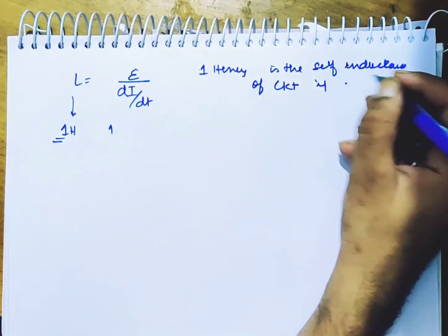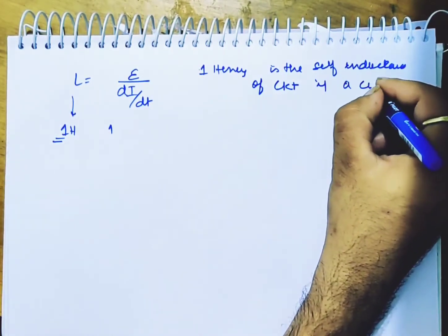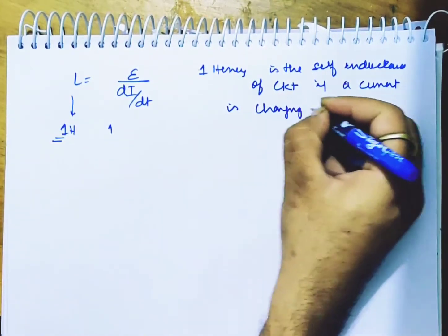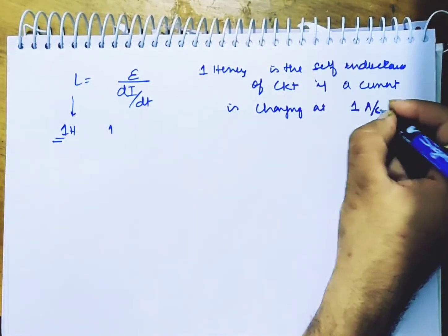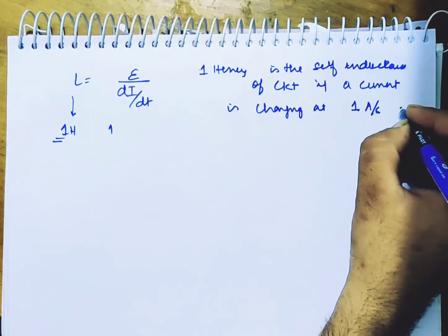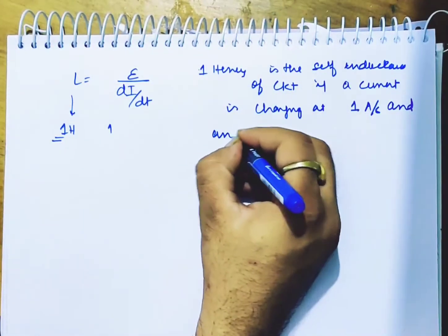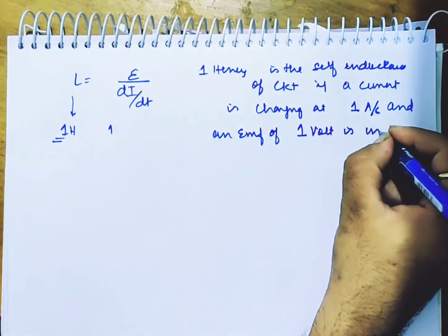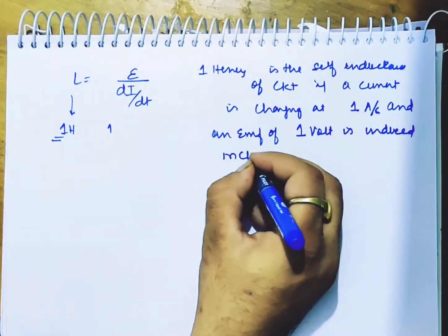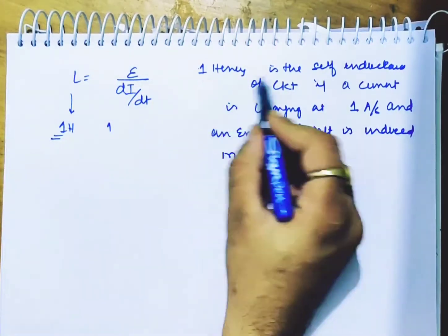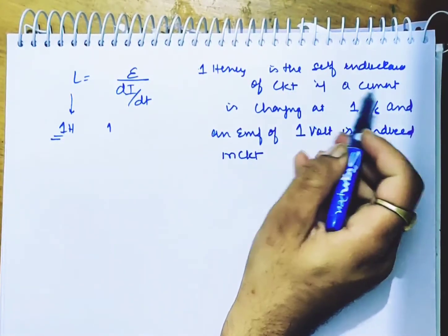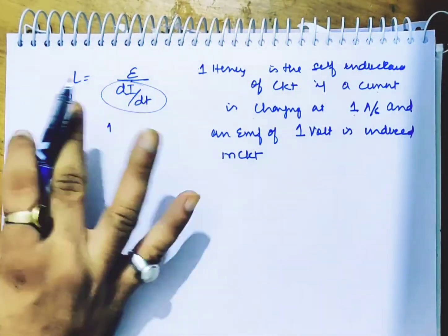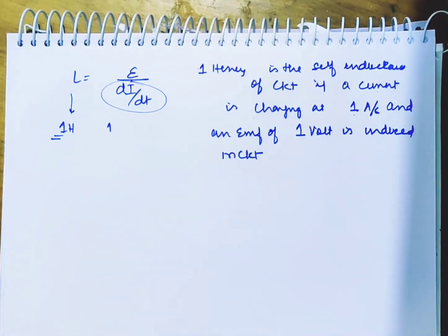if a current is changing at 1 ampere per second and an EMF of 1 volt is induced in the circuit. Very important. So 1 Henry is the self-inductance of a circuit if a current is changing at 1 ampere per second and an EMF of 1 volt is induced in the circuit.